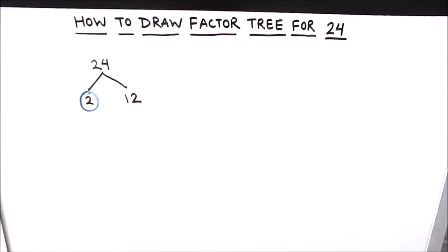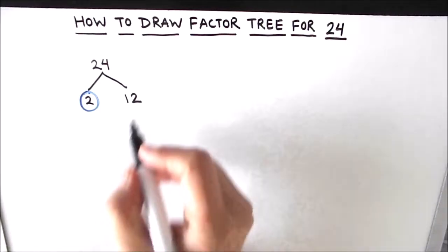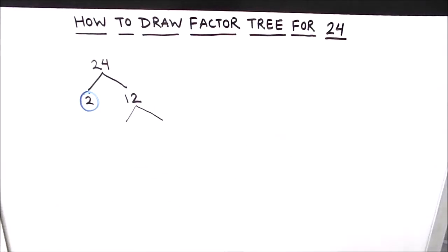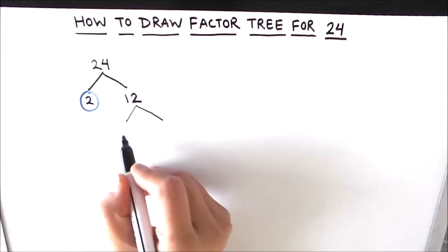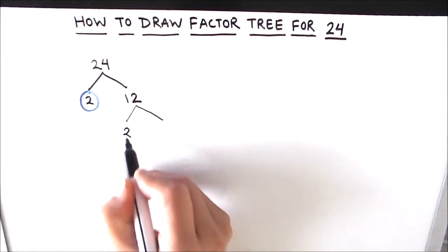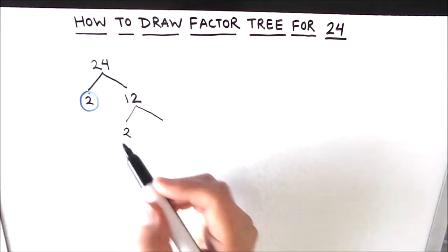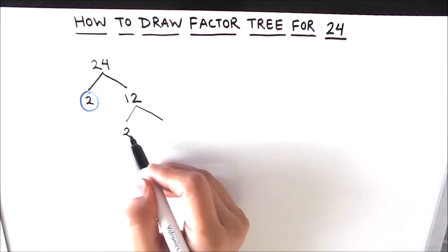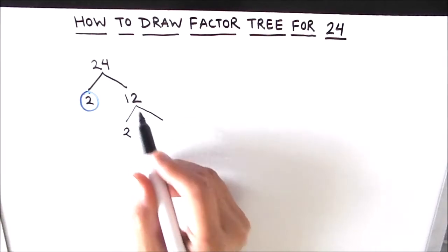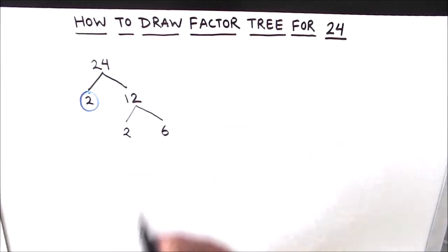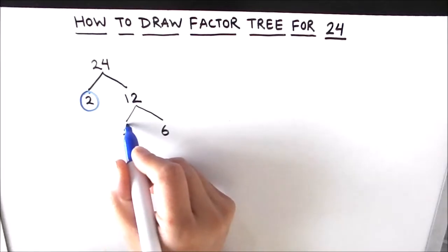That circled 2 is one of the prime factors of 24. Now 12 is the other factor, which we can further break down. Since 12 is also an even number, one of its factors is 2. We divide 12 by 2: 2 times 6 is 12, so 2 and 6 are the two factors of 12.